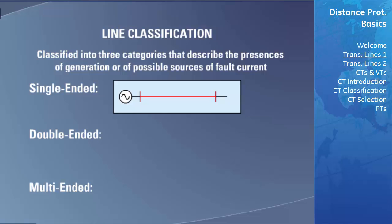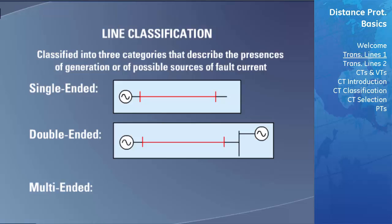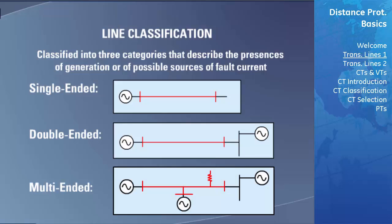A double-ended line has only two boundaries, each of which can have a source of fault current available. This type of line is used to deliver power usually in different directions at different times. If a fault occurs on this transmission line, current will be fed to the fault from two locations. A multi-ended line has more than two boundaries, each of which can have a source of fault current available. For this type of line, the direction of normal power flow can be highly variable, and at the time of a fault, it will be fed from many different locations.